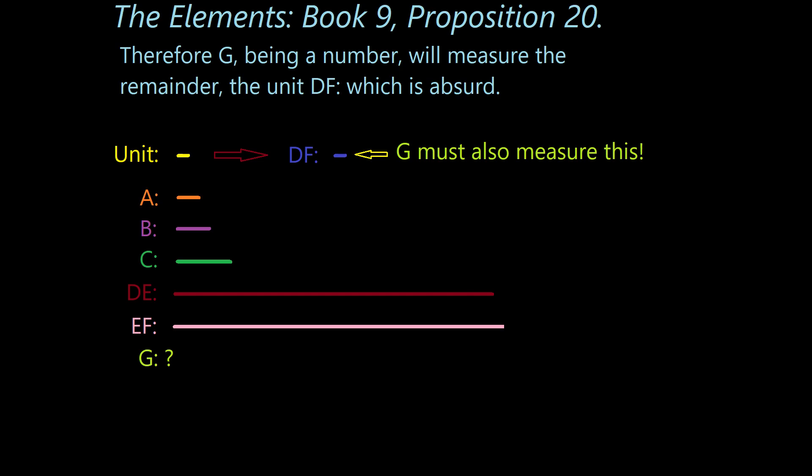See, if G measures both DE and EF, then it has to measure DF as part of that. But DF is the unit variable. It is equivalent to saying that G is a factor of 1, which, as Euclid pointed out, is absurd.